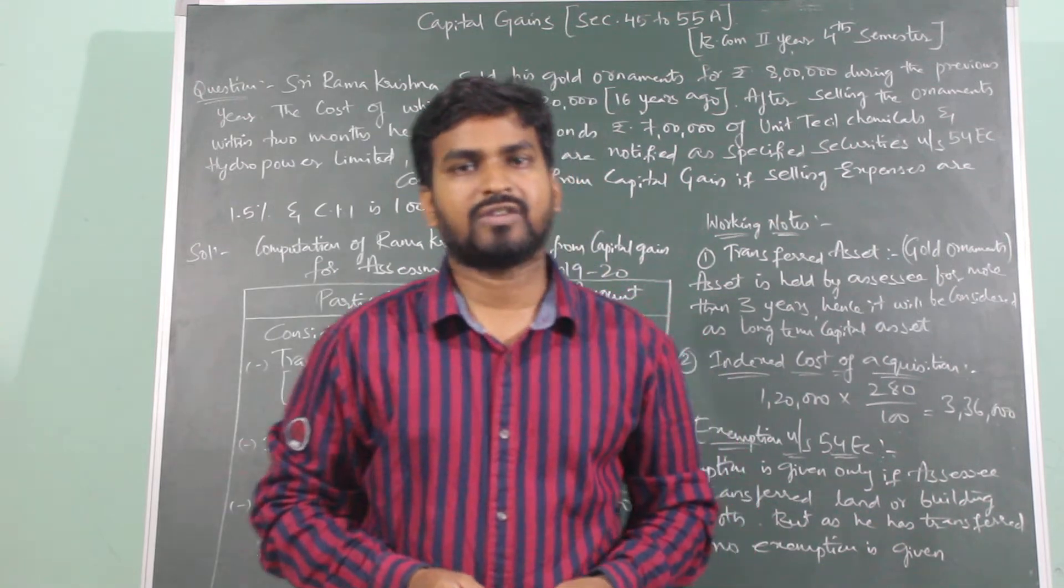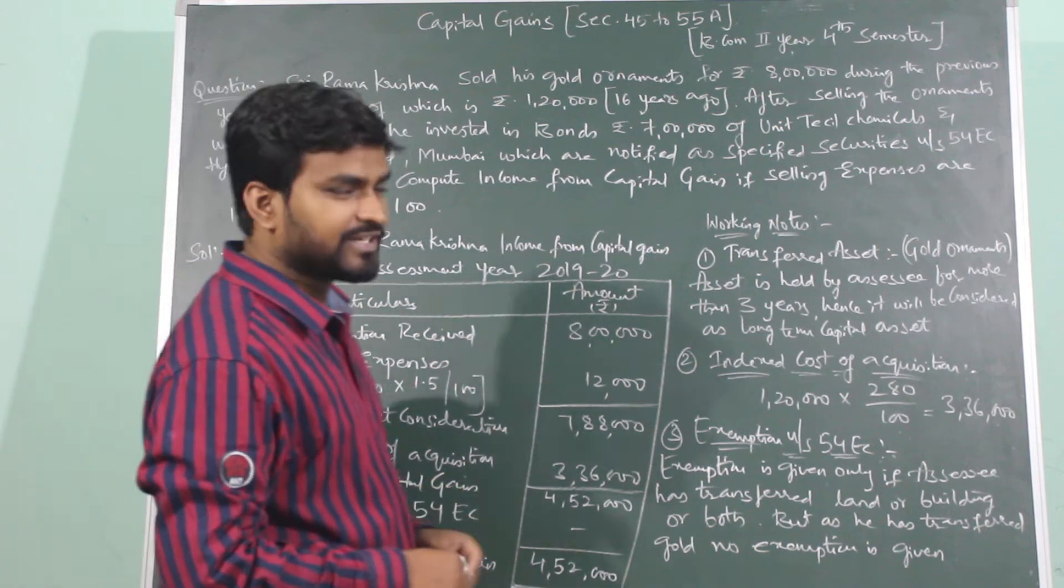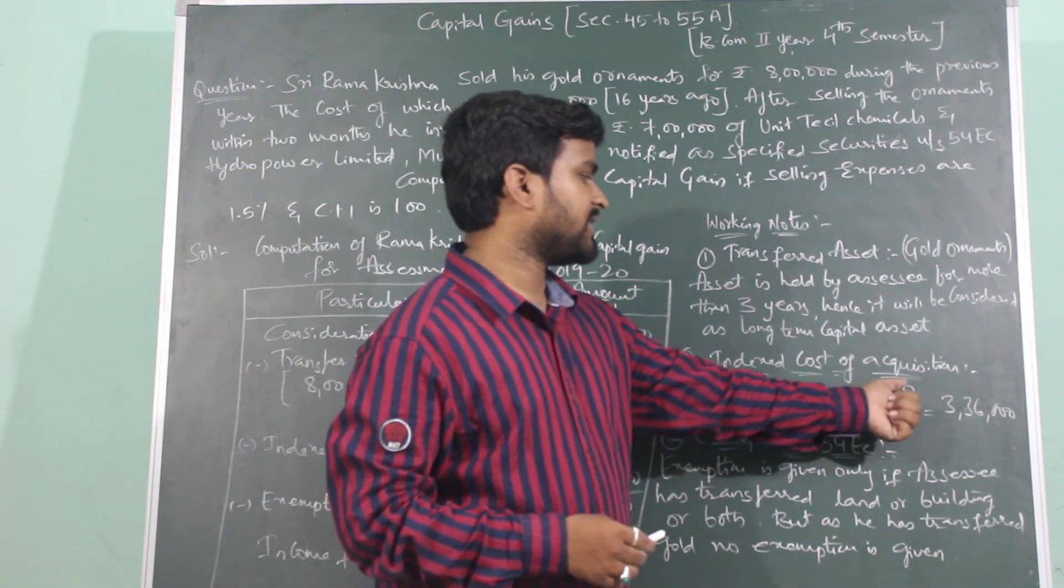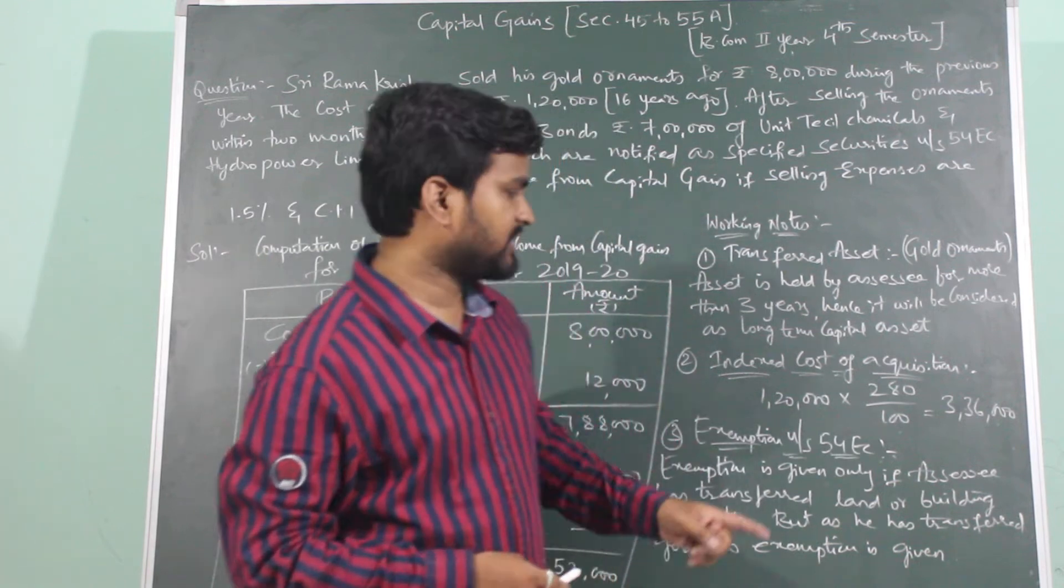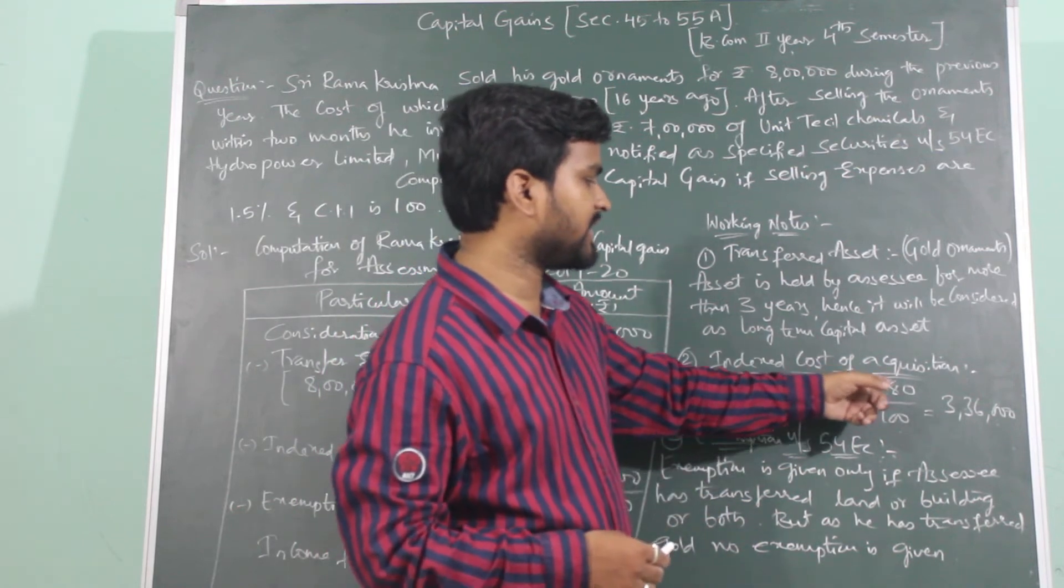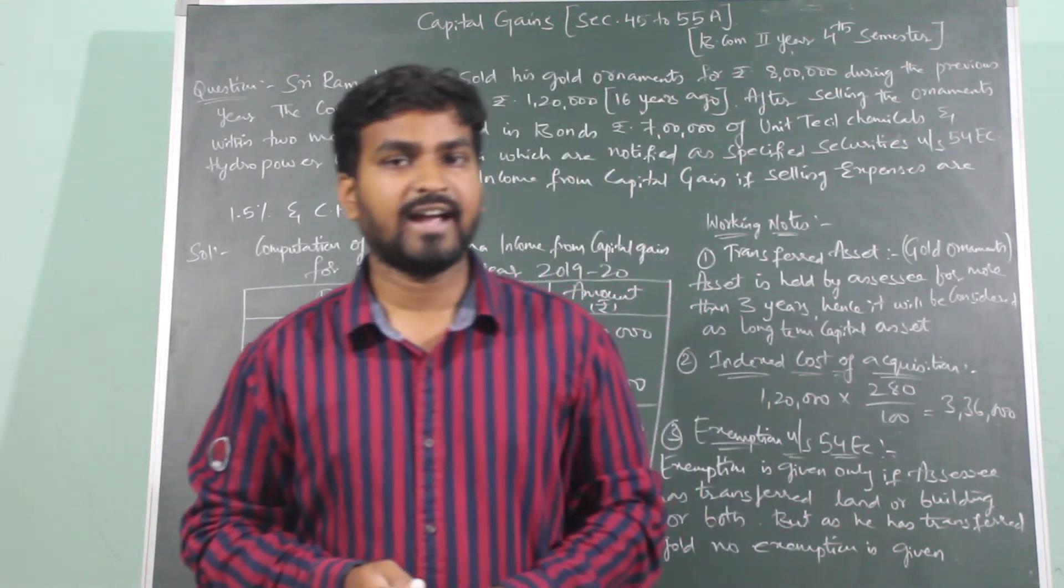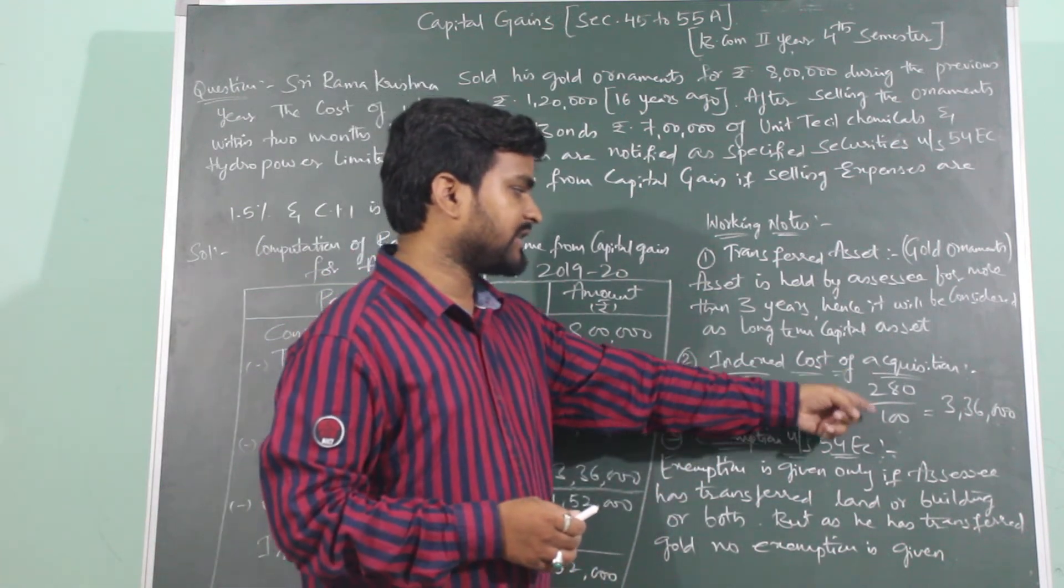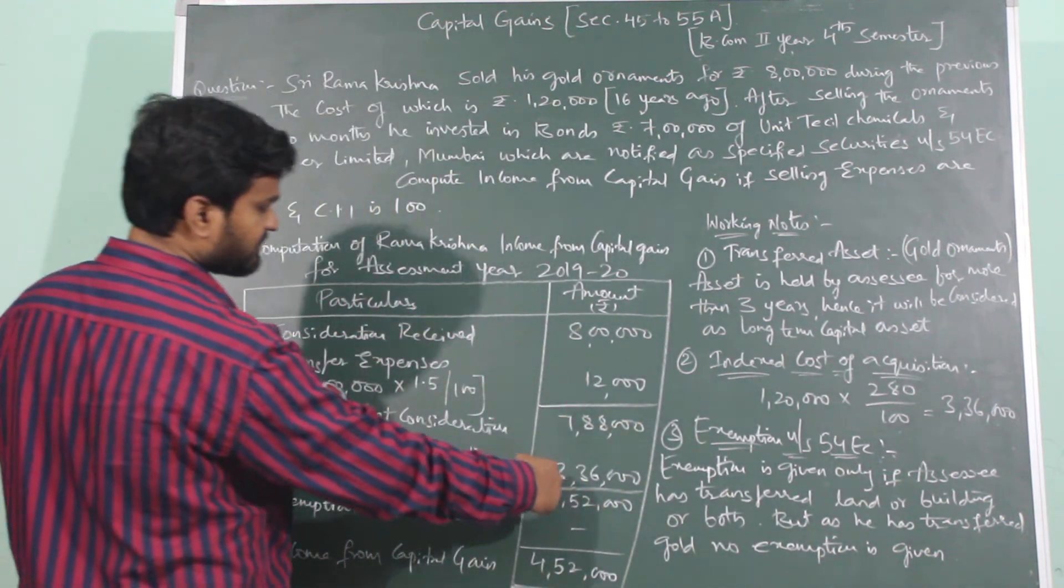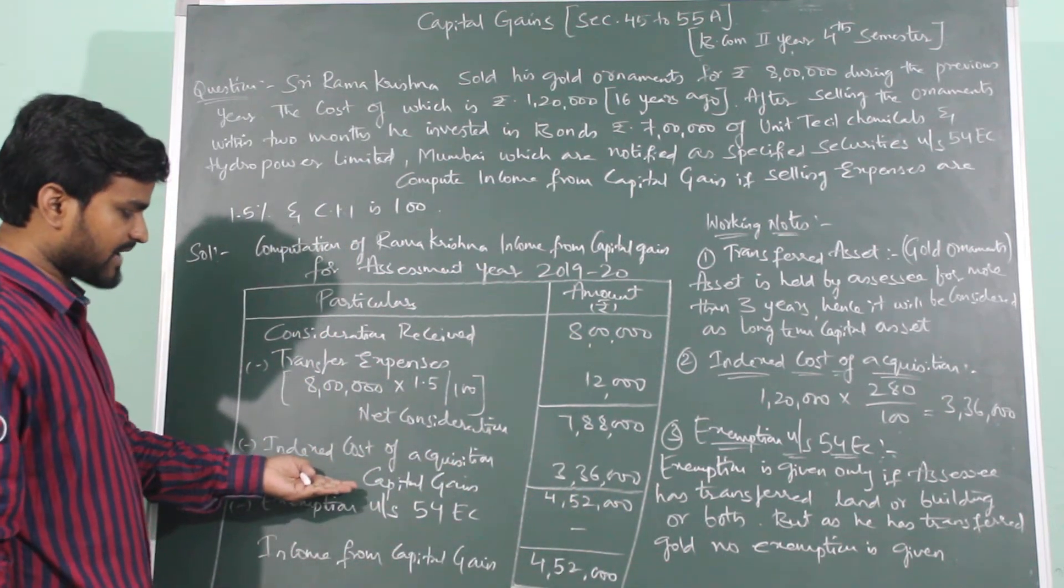What are we going to do next? Next is the cost of acquisition. Cost of acquisition ko badhake batana kaisa? Original cost into previous year index divided by index of the year of purchase. Kitne mein kharithe? Original cost 1,20,000 into previous year index 280 divided by year of purchase ka index 100. 1,20,000 into 280 divided by 100 which is 3,36,000. So 7,88,000 minus indexed cost of acquisition 3,36,000, which gives us 4,52,000.